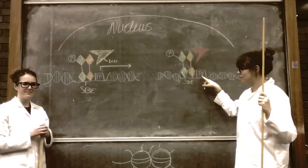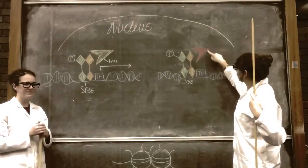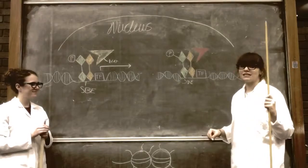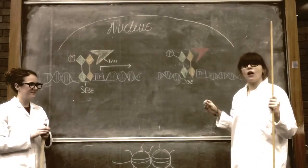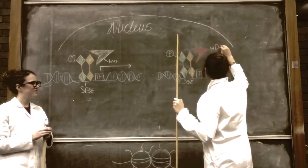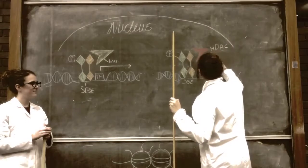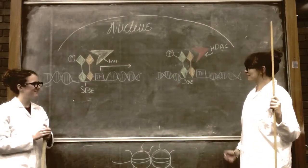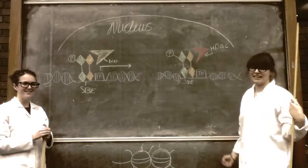This once again interacts with your transcription factor. But this time it's your co-repressor that comes along, and this is known as histone deacetylase, also known as HDAC. This turns off gene expression.